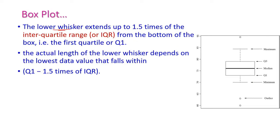The lower whisker extends up to 1.5 times the interquartile range (IQR) from the bottom of the box. It may be somewhat less than the minimum sometimes — that is, Q1 minus 1.5 times IQR.